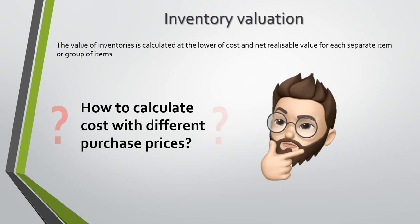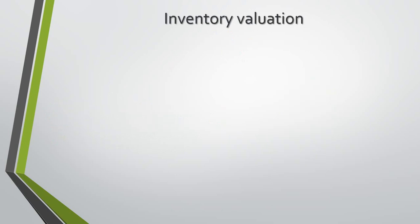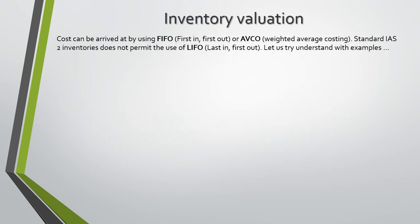But how will we keep accounting if the purchase price differs from one portion to another? Cost can be arrived at by using first-in, first-out or weighted average costing methods. Also in study books, you can face the last-in, first-out method, but IFRS does not permit the use of this one.